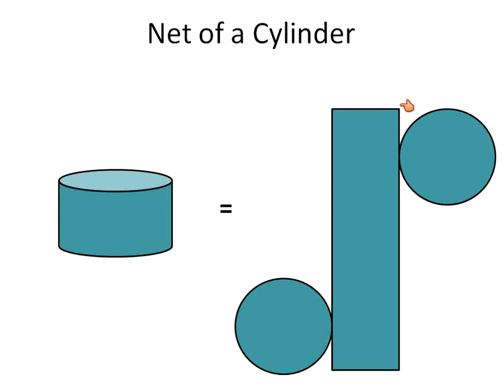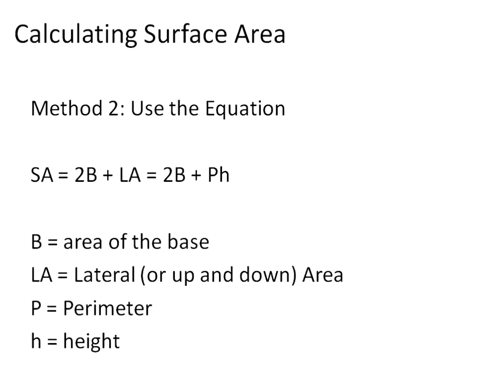So the net is shown there. Here's the equation. This is method number two. Our equation can be written in one of two ways. Two times the area of the base, B stands for the area of the base, plus the lateral area, or the lateral surface area. The lateral surface area is the area that stands upright. Essentially that is the rectangle in all of those shapes that we pulled apart.